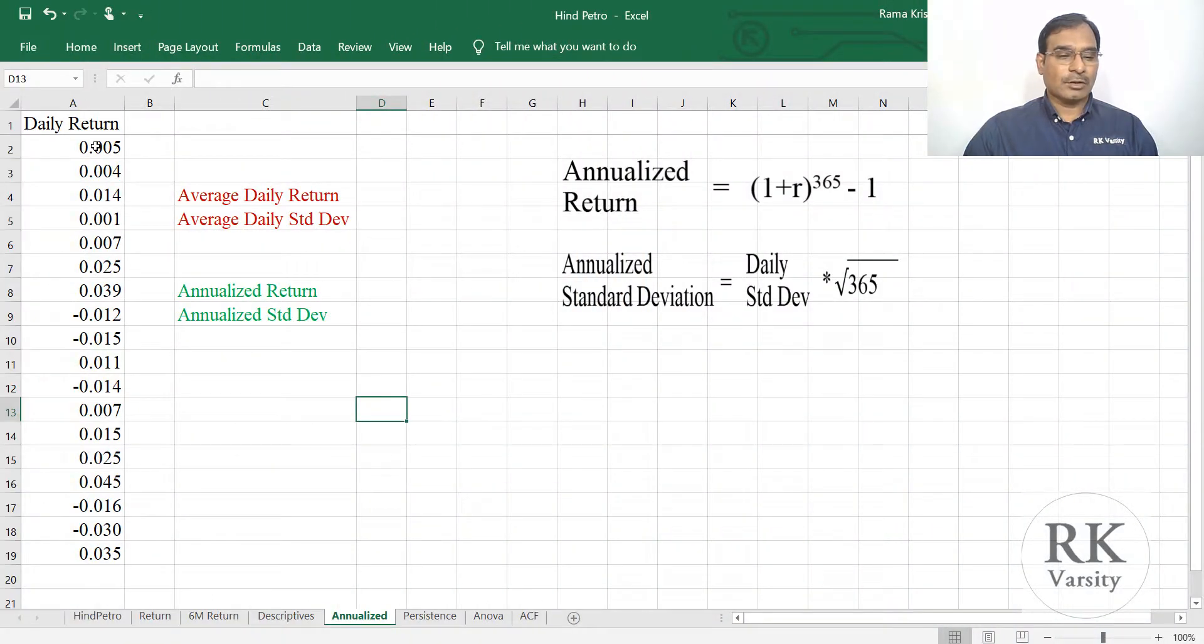Here is a daily return series of a stock and this daily return is calculated in decimal points. That means in an equation, this is not multiplied by 100. Using these daily returns, first we will calculate the average daily return.